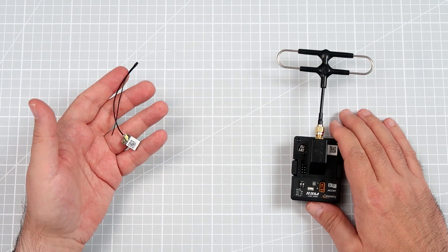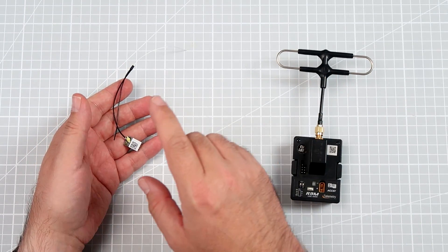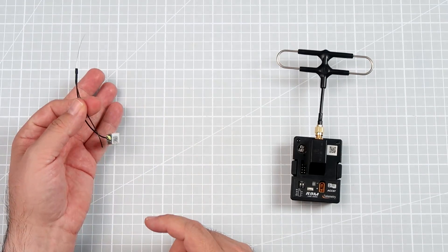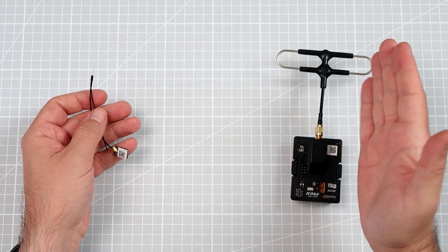So it's kind of obvious that if you are really far, the sooner you will lose the telemetry downlink from the receiver to the transmitter than the receiver.